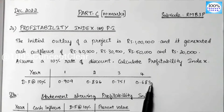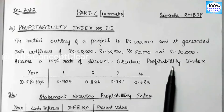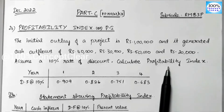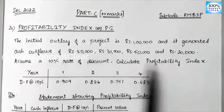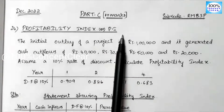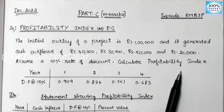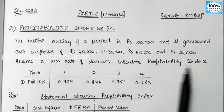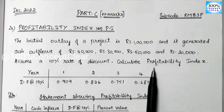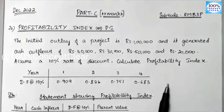A detailed video on this concept is already available on our channel — check the link in the description. The Profitability Index method is also known as the P.I. method, the Excess Present Value method, and the Benefit Cost Ratio. These are all alternative names, so if any of these appear in a question, you should calculate the Profitability Index.